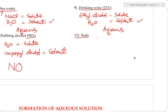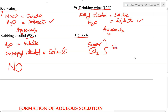Lastly, soda. In soda we have sugar — there's a lot of sugar but not as much compared to the amount of water. We also have CO₂ gas. So both sugar and CO₂ are our solutes — two types of solute. Water is our solvent. Can we call this an aqueous solution? Yes, because water is the solvent.